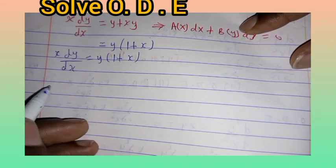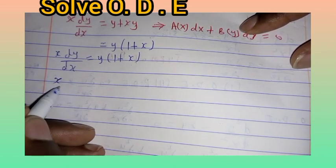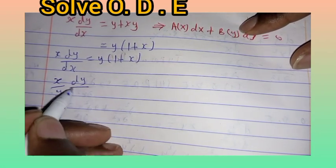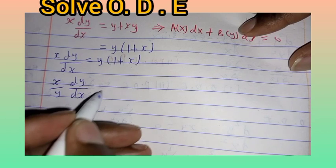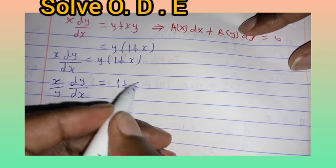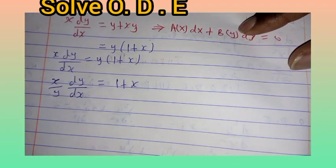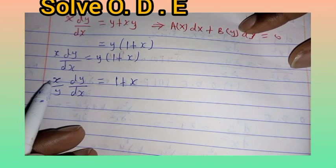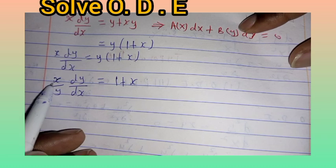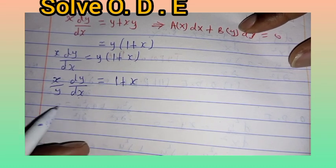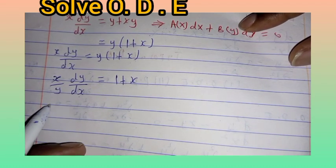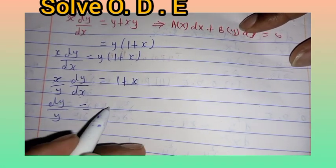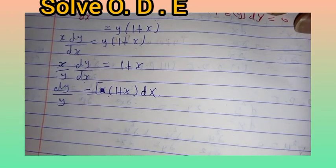From there, we divide both sides by y, giving x over y times dy/dx equals 1 plus x. Then we multiply by the reciprocal of x, that is dx over x, to separate the variables, so we get dy over y on the left side.